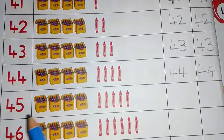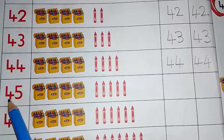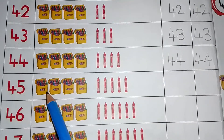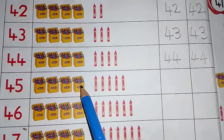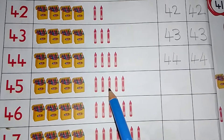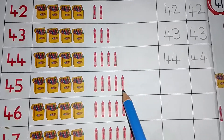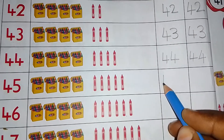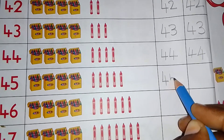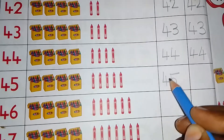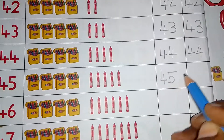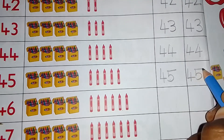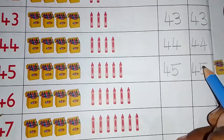Next number 45. 45. Count this object. 10, 20, 30, 40, 41, 42, 43, 44, 45. How many crayons? 45. We write 45. How to write 45? Write 4, then write 5. 4, then write 5. This is 45. Do you follow?